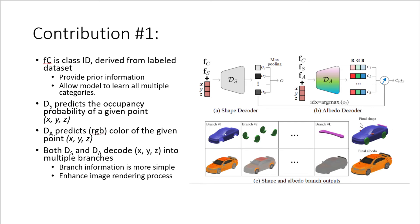The third part of their contribution is the branching structure. Both the shape decoder and albedo decoder output multiple branches from 1 to K. For the shape decoder, each branch captures a specific part of the target object; for the albedo decoder, each branch captures a different color version. The argument is that branching allows the model to encode the subject into simpler parts or simpler color versions, making learning more efficient.